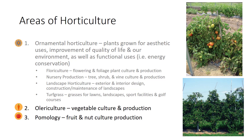The second major area of horticulture is olericulture, which is the growing, harvesting, storing, processing, and marketing of vegetables. Commercial vegetable production can be broken down into two main categories—fresh market and processed products such as canned, dried, or frozen vegetables. The total value of vegetable crops in the United States is estimated to be well over $10 billion annually.